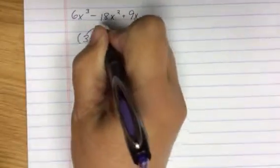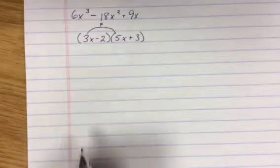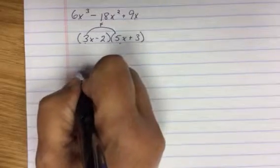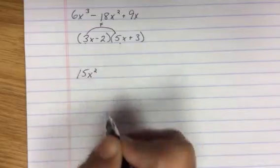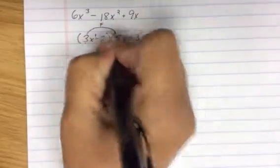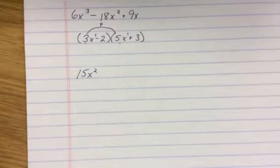F is first term to first term. So 3x times 5x is 15x². Remember again, your rule of exponents: there's a power of one on those two. And when you multiply exponents, they actually add.